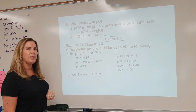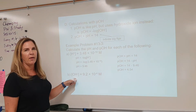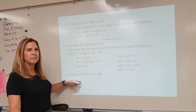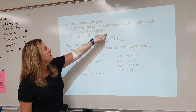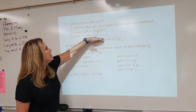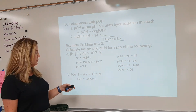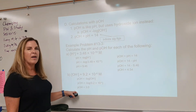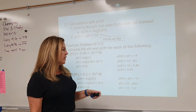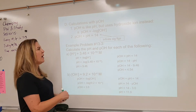Now for the second part: this time we have not been given the hydrogen ion concentration — we've been given hydroxide. Since we have the hydroxide ion concentration, we can calculate the pOH using pOH equals the negative log of hydroxide. Once we have the pOH, we use pH + pOH = 14 to solve for pH. Write the equation, plug in the information, get pOH, then rearrange and plug in to get pH. Box or highlight both answers.